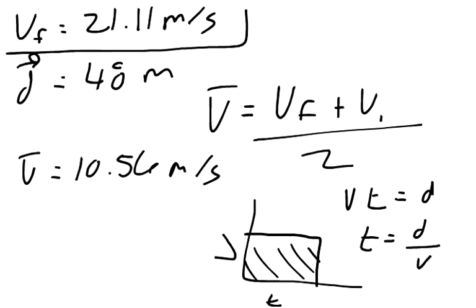Since we were going 10.56 meters per second and we went 48 meters, so 48 divided by 10.56. And we get roughly our displacement. I'm sorry, not the displacement, but the time. The time it took to do that is 4.55 seconds.